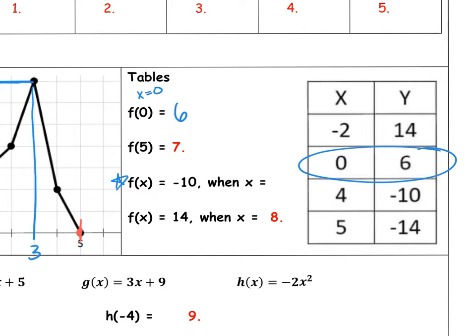Now I'm looking at this one here. This one is backwards. It's saying that the function is equal to negative 10, meaning y equals negative 10. When y is negative 10, x is equal to 4.